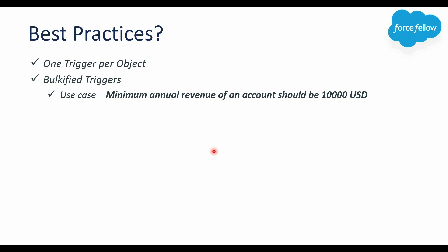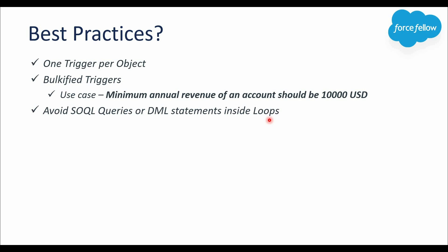The next best practice is to avoid SOQL queries or DML statements inside loops. In Salesforce, per-transaction governor limits allow only 100 SOQL queries and 150 DML operations in a single transaction. We should write SOQL queries and DML statements outside of loops whenever possible to avoid hitting governor limits. We'll see practical scenarios on this in coming videos.